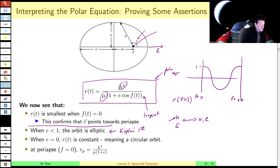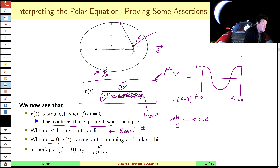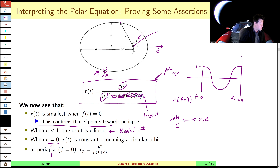When the eccentricity is zero, this entire term disappears and the expression simply becomes r equals h² over μ, so that the distance from the central body is a constant. Specifically, it's a circle — the orbit sweeps out a circle as you change f. Not particularly surprising, since eccentricity is generally thought of as deviations from a circle. So if there's no deviation, you have a circular orbit.